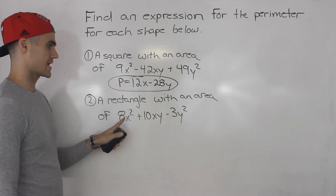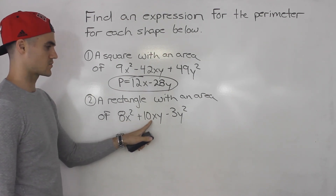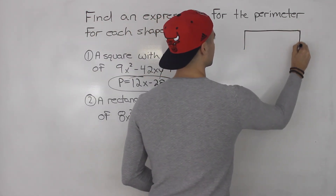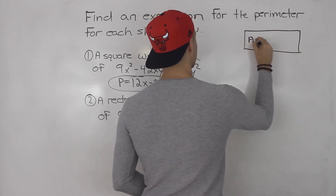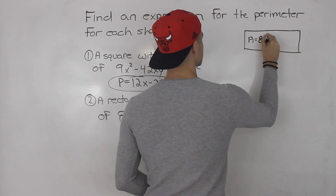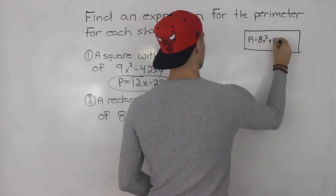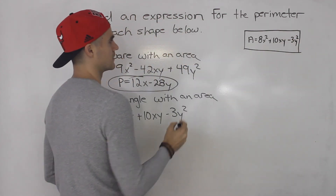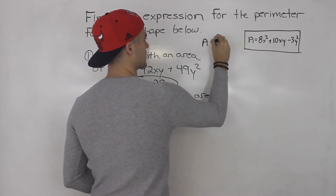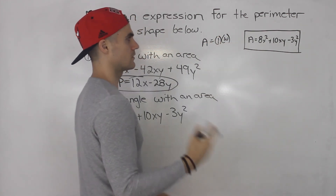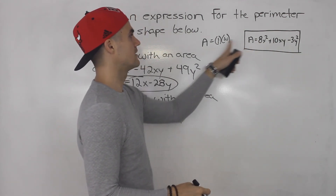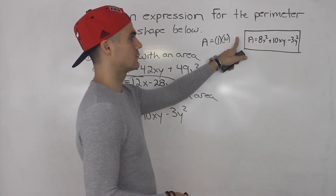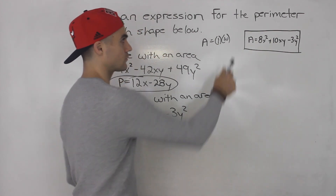Moving on to number two: we have a rectangle with an area of 8x squared plus 10xy minus 3y squared. The area of a rectangle is length times width, so like before we're going to factor this expression into two brackets, and those will be our length and width. Then we can add up all the sides to get an expression for the perimeter.